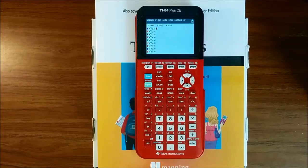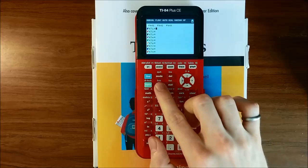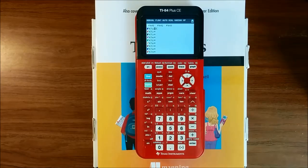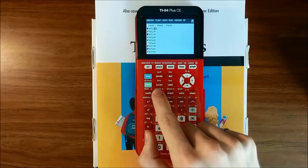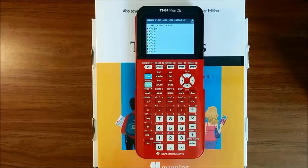Now we can enter our very first equation. Let's start with the very simple Y equals X. I've gotten the X variable by pressing the XT theta N key, directly under mode. Regardless of which mode I am in, pressing the XT theta N key will type the independent variable for that particular graphing mode. In function mode, that is X.